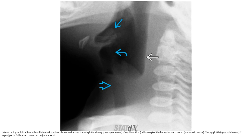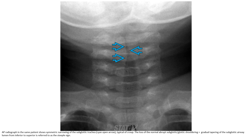This is the case of a nine-month-old infant. On the lateral view, narrowing of the subglottic area and overdistension of the hypopharynx is noted. The epiglottis and aryepiglottic folds appear normal. On the AP radiograph in the same patient, symmetric narrowing of the subglottic trachea is seen, with loss of the normal subglottic shouldering — referred to as the steeple sign.